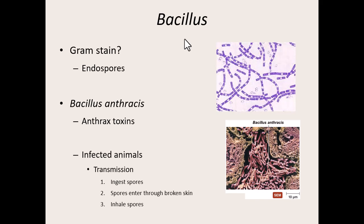We only care about the ones that do cause disease. The top one in the Bacillus genus that causes issues for humans is Bacillus anthracis. Its biggest virulence factor is the toxin — anthrax. When we talk about anthrax poisoning, it means you have that toxin in your body. A lot of times it's not the bacteria that causes the issues, it's the toxin the bacteria makes. There are three ways you can pick up this bacteria, and depending on how you pick it up depends on what kind of anthrax disease you have: you can ingest the spores, get them through an open wound, or inhale them if they're airborne.